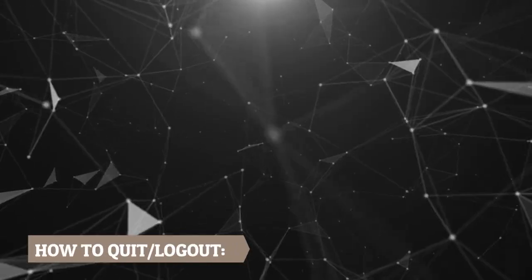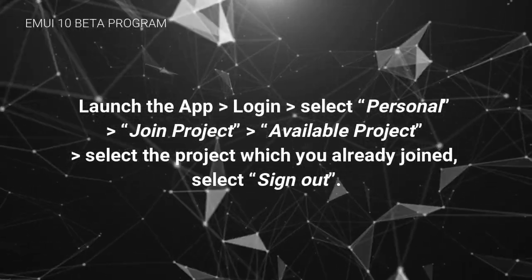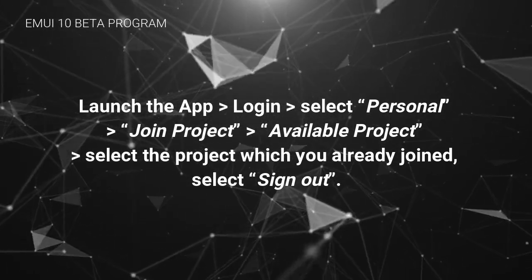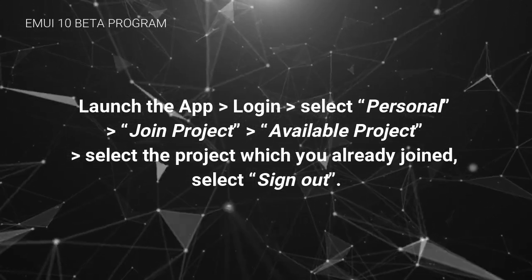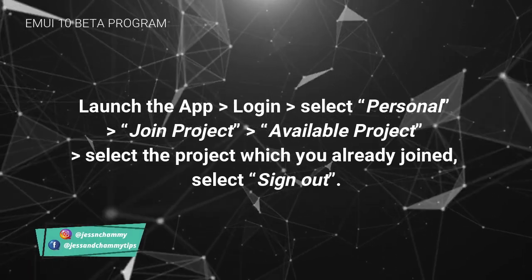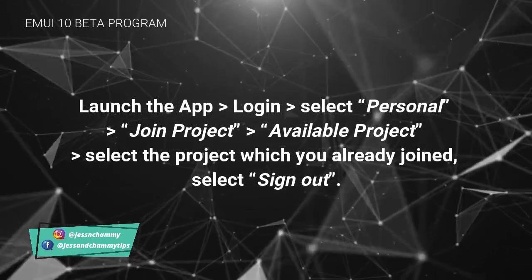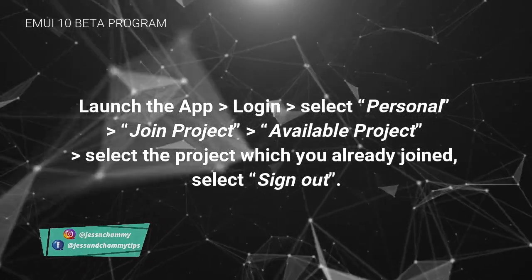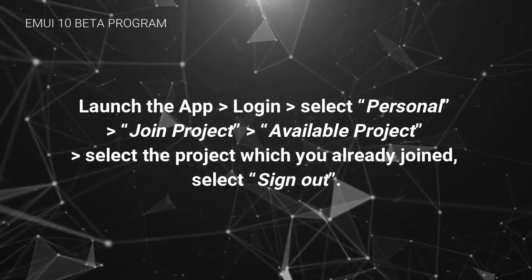How to quit the beta program: Launch the app, go to Login, select Personal, then select Join Project. Go to Available Projects and select the project you already joined, then select Sign Out. After you quit, Huawei will remove your application within 48 hours and you won't receive any official beta notifications.